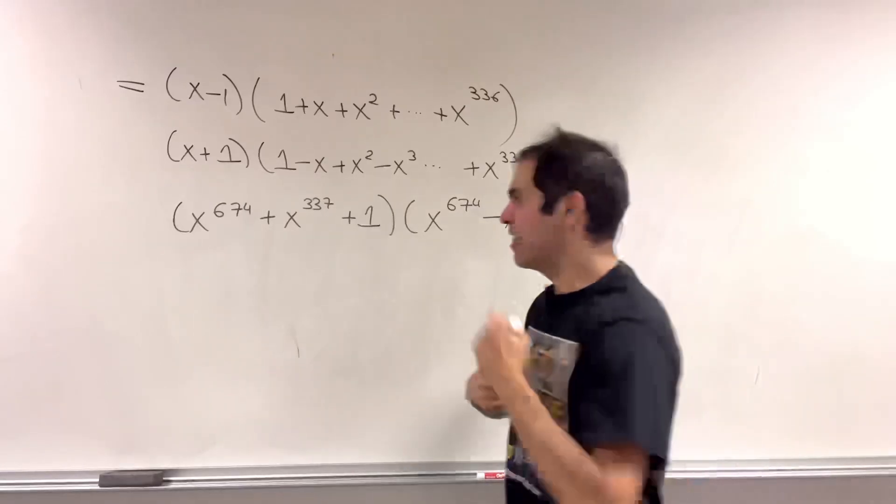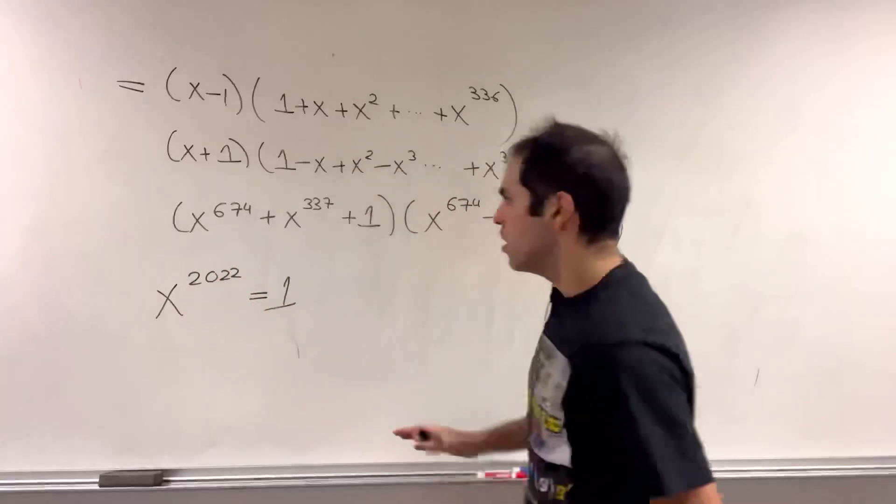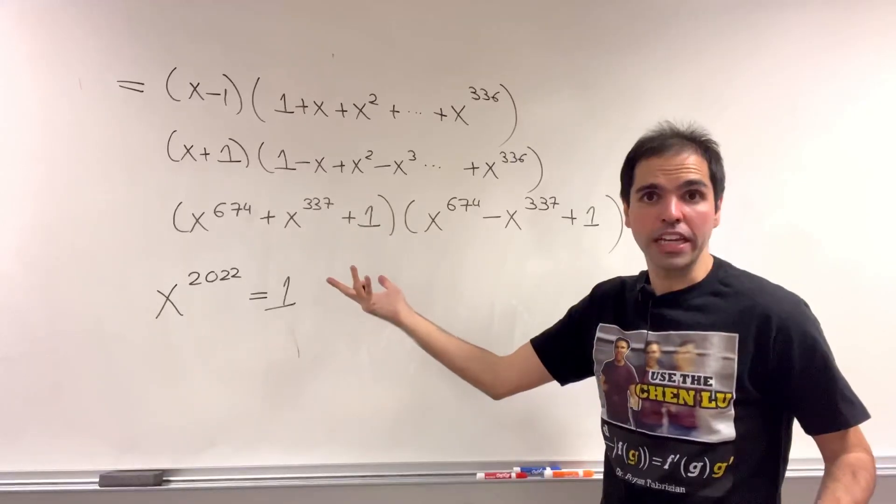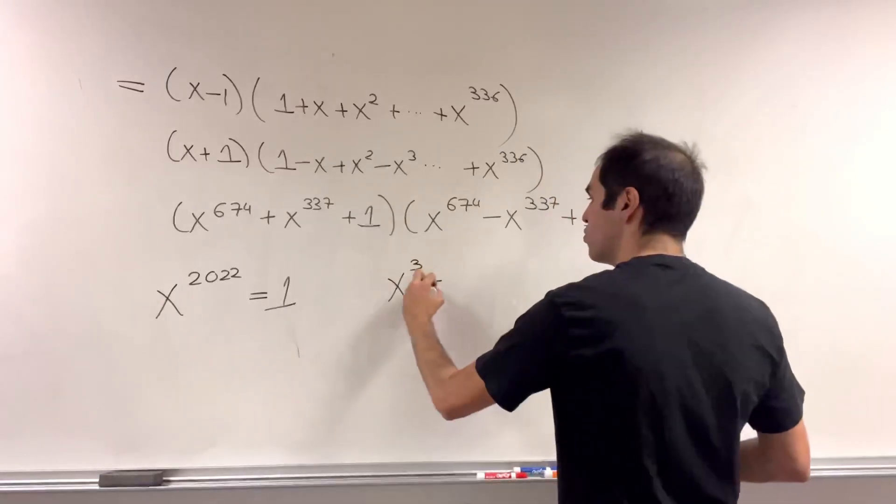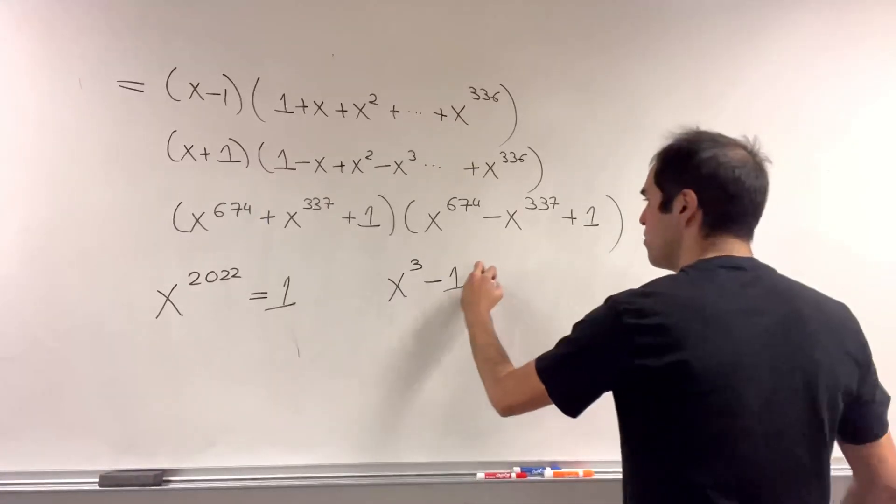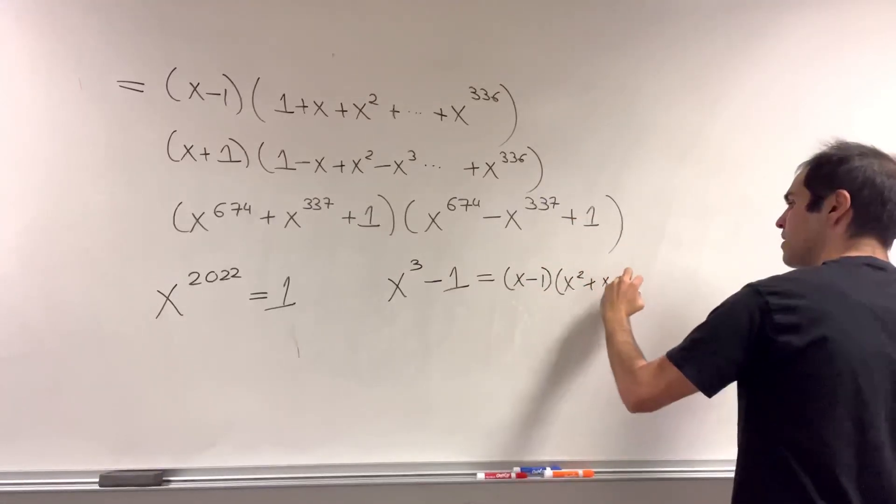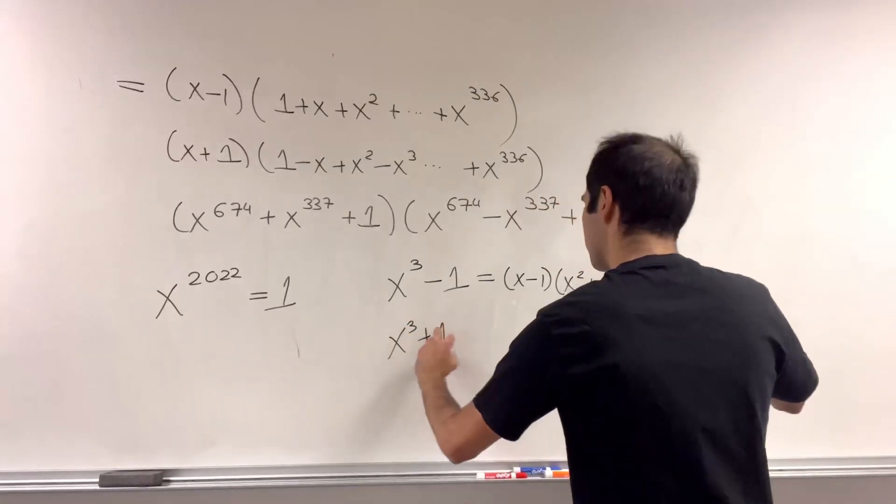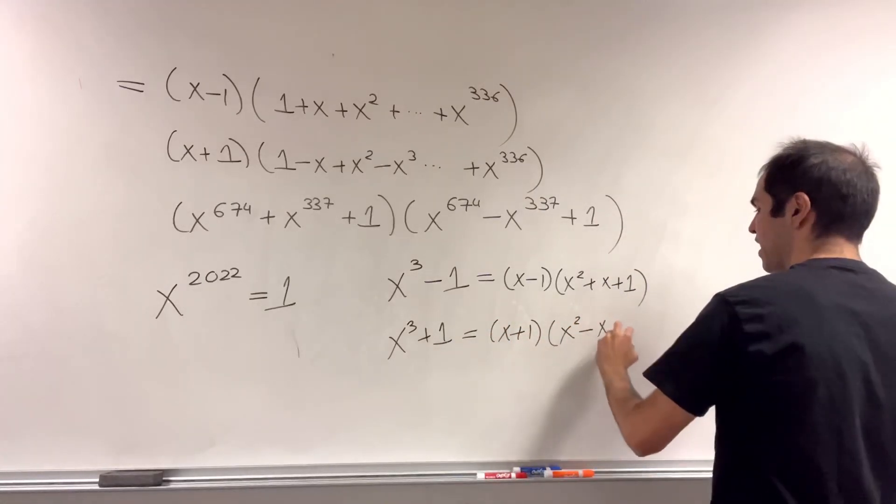Because think about this a little bit. Well, x to the 2022 equals 1. Well, 2022 is divisible by 3. So you should expect a root, a third root of unity. So you should expect x cubed minus 1 to divide this. And remember, x cubed minus 1 is x minus 1 times x squared plus x plus 1. And similarly, with x cubed plus 1, which is x plus 1 times the alternating sum, x squared minus x plus 1.